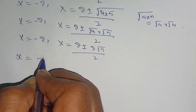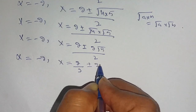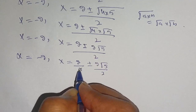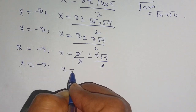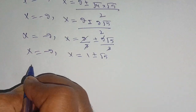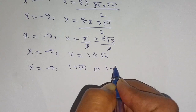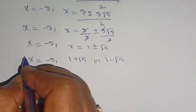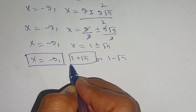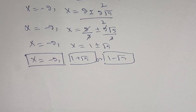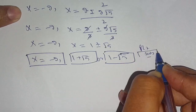Now we get x is equal to 2 divided by 2 plus or minus 2 times the square root of 5 divided by 2. We can cancel the 2s and the value of x is equal to 1 plus or minus the square root of 5. Thus the three roots of x for this cubic equation are: x equals minus 2, x equals 1 plus the square root of 5, and x equals 1 minus the square root of 5. If you are new here, make sure to subscribe to our channel for more informative videos. See you in the next video, till then bye.